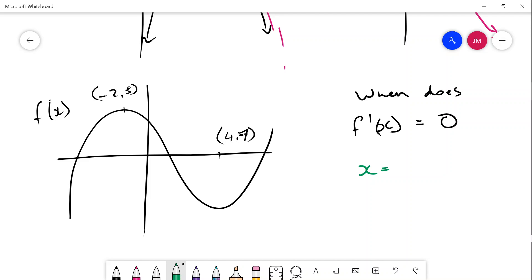When does the derivative equal 0? You'd say it's going to be at these two points—when x equals -2 or x equals 4. You could also ask, when is the derivative less than 0? That means when is the derivative negative.